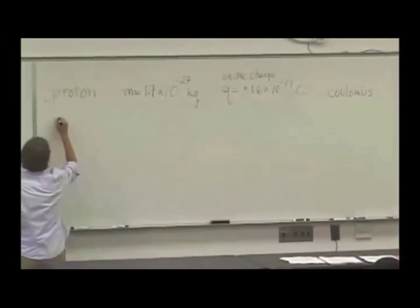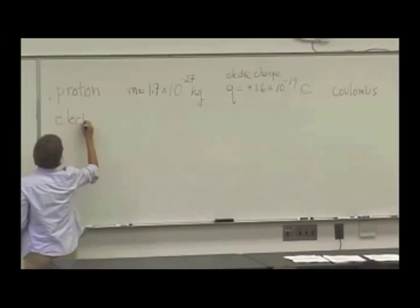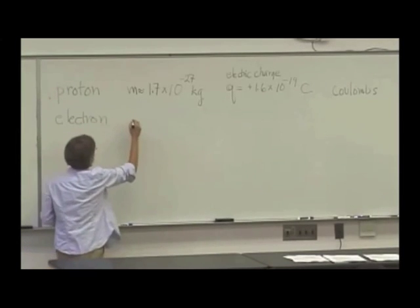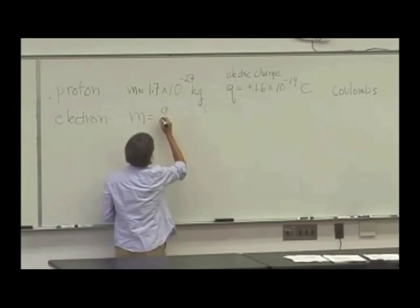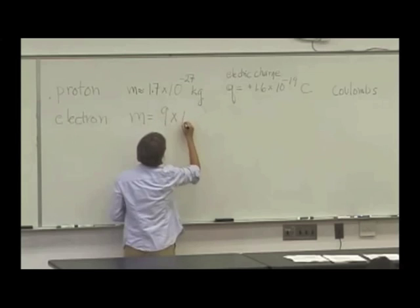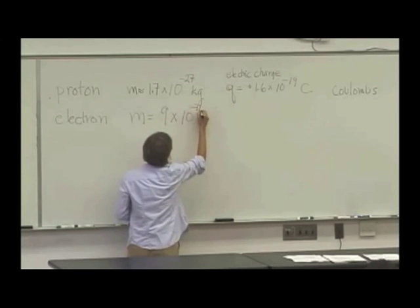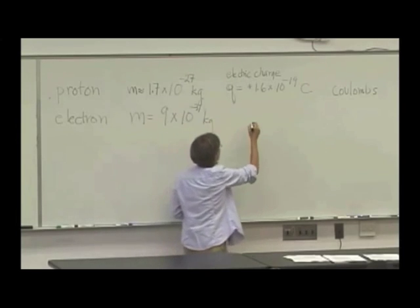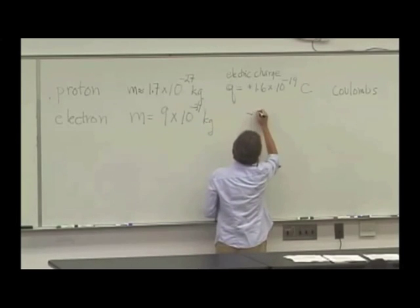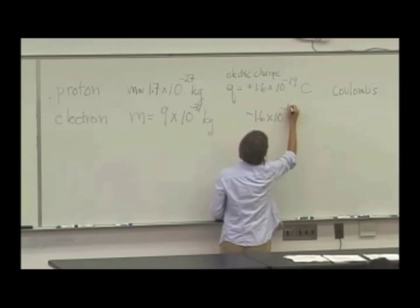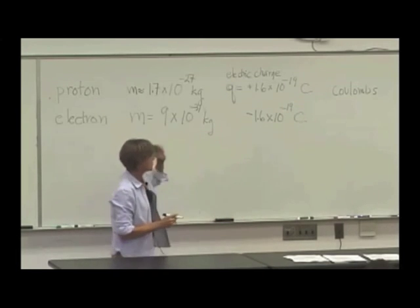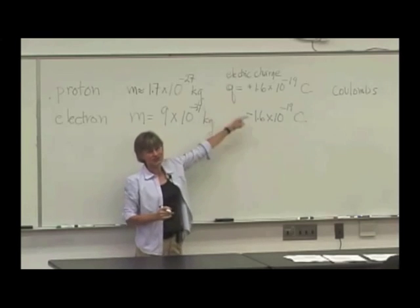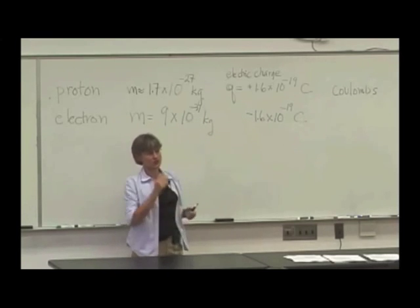And it has a positive sign. You know about electrons also. Electron is much less massive than a proton. It has a mass of about 9 times 10 to the minus 31 kilograms. And its charge is minus 1.6 times 10 to the minus 19 coulombs. So it has a negative charge exactly opposite to the positive charge on a proton.